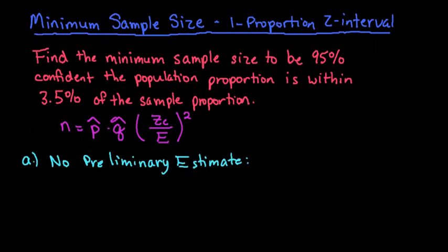Hi, for this video what we are going to do is find the minimum sample size necessary for a one proportion z interval to be within a certain margin of error.